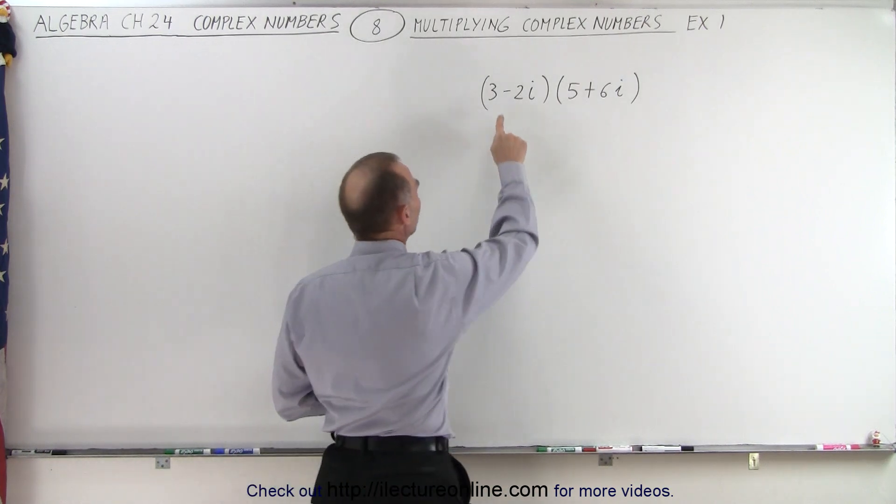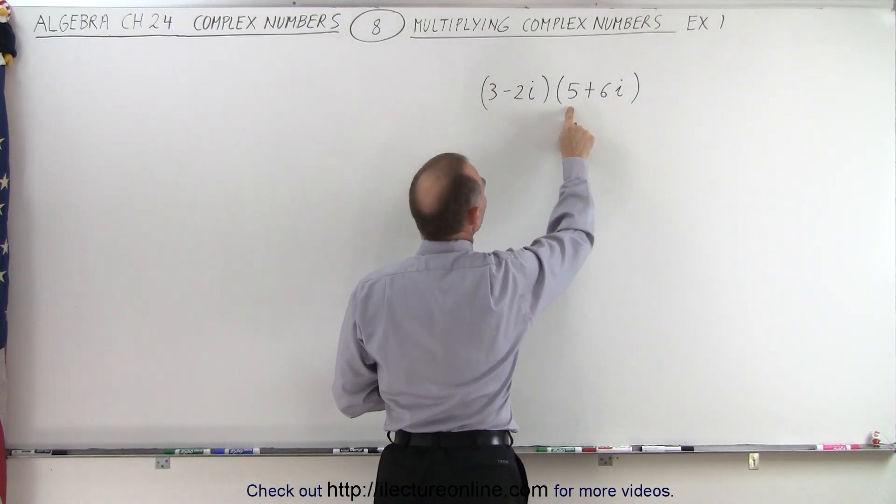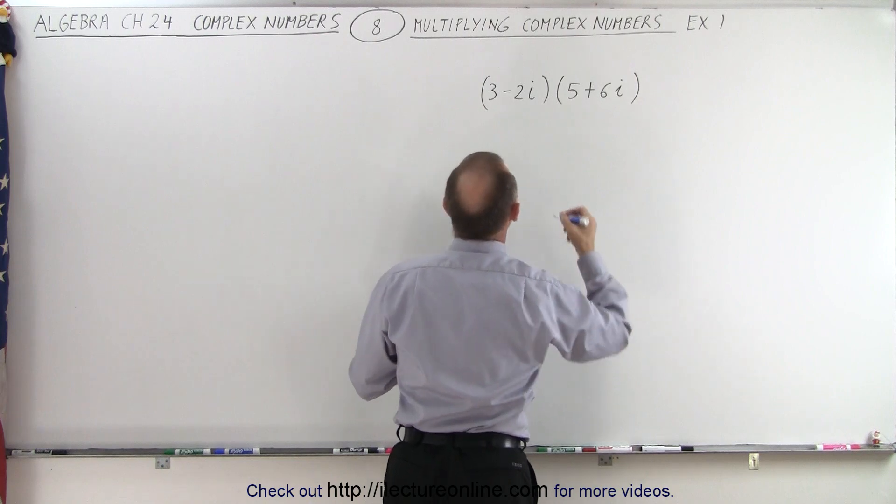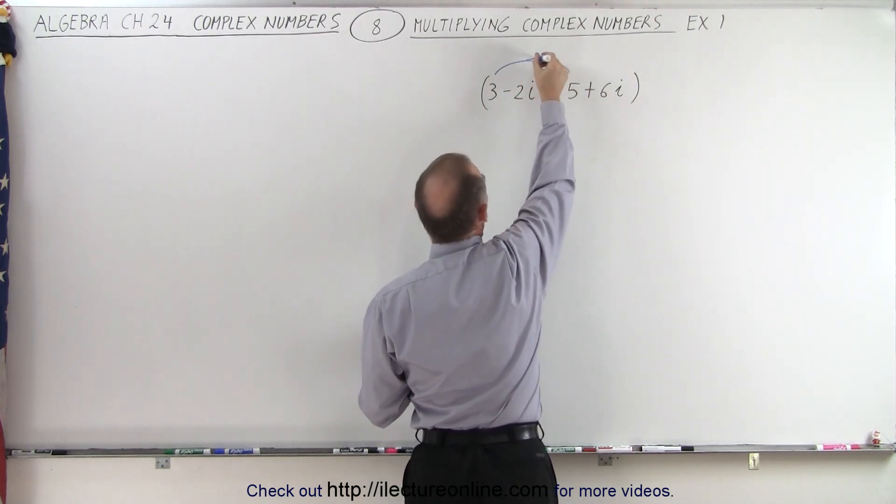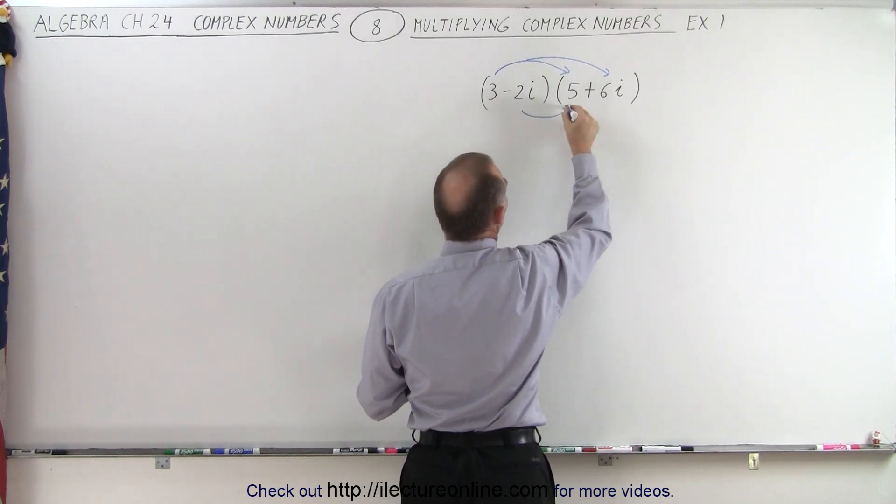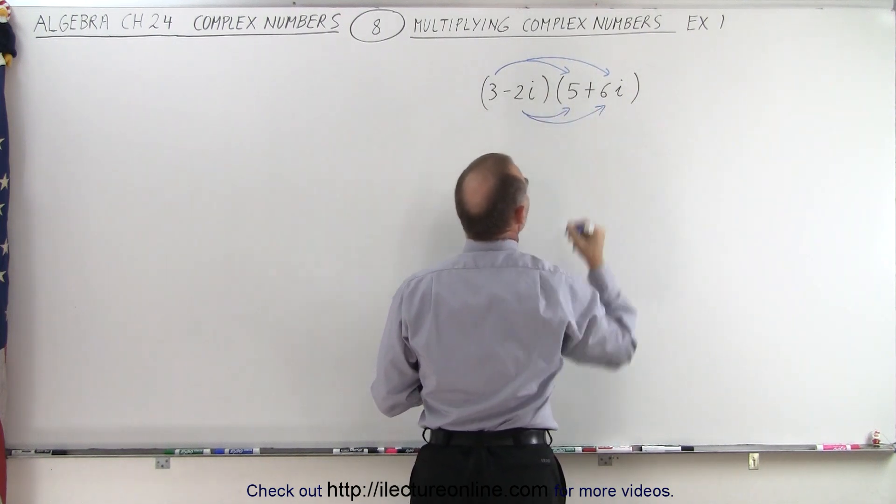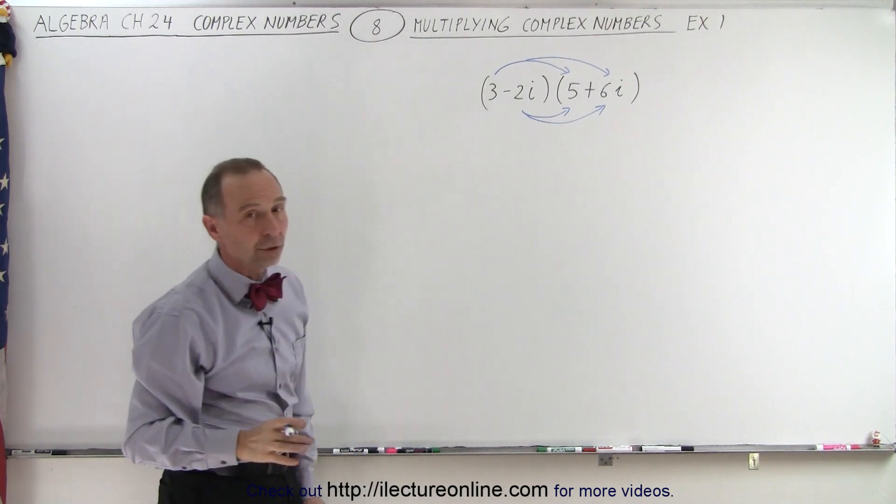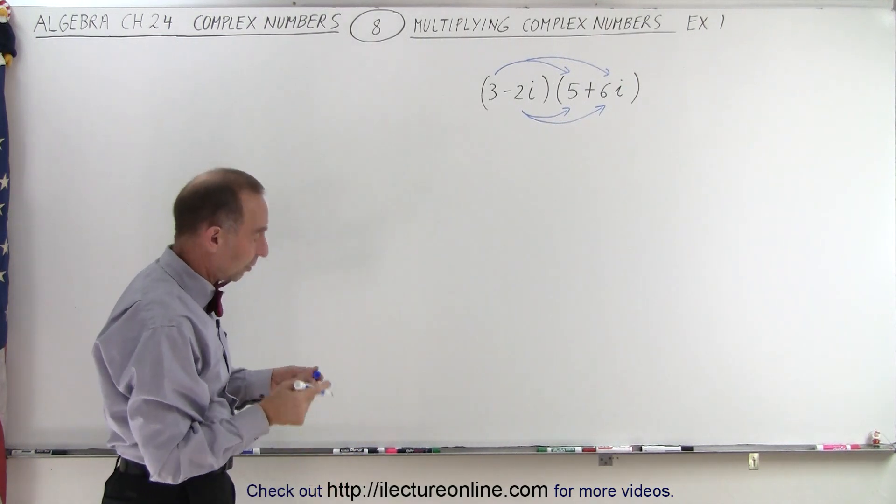We're going to take each term of the first binomial and multiply times each of the two terms in the second binomial. So multiply this times this, and this times that. We do the same with the second term. We multiply it times each of the two terms in the second binomial. So in essence, we have four products now.